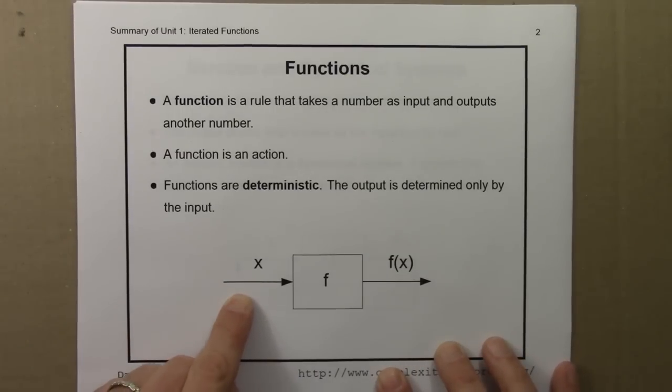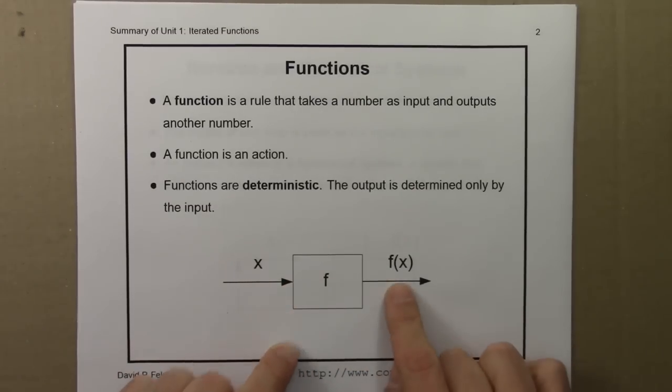x, here's the input. Something happens inside this box. This action is called f and it produces a new number called f of x, x after f has done its thing.